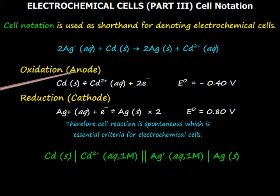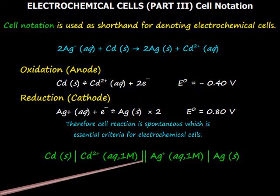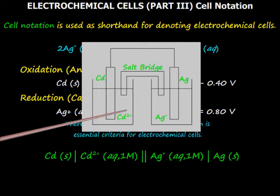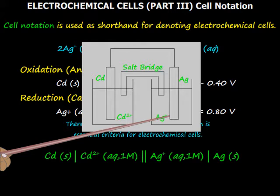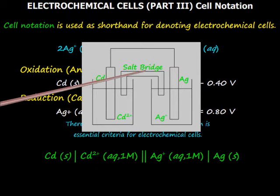The shorthand cell notation is something like this. See clearly that there are some vertical lines drawn. The single vertical lines indicate the interface of the solid and aqueous phase where the oxidation or reduction reaction is actually taking place. The double vertical line indicates the salt bridge.